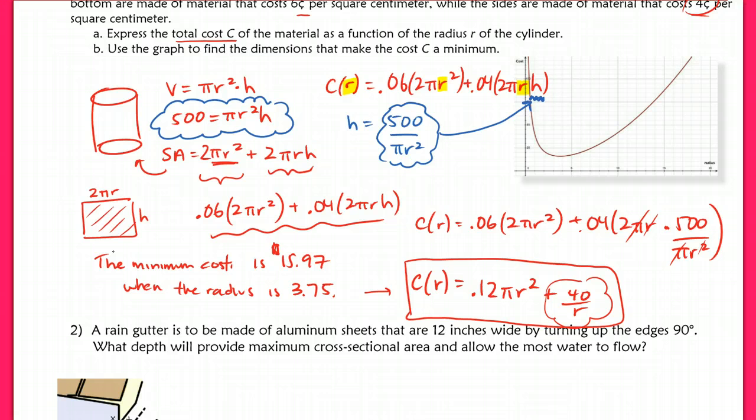If I were to answer that in a sentence, I would say the minimum cost is $15.97 when the radius is 3.75. That's when you don't necessarily know how to find the max or the min of the function that you're given. If it's a quadratic or quadratic-like function, we've already studied how to do that. Like I said, this is something that you're not going to be able to do until probably next year in calculus.